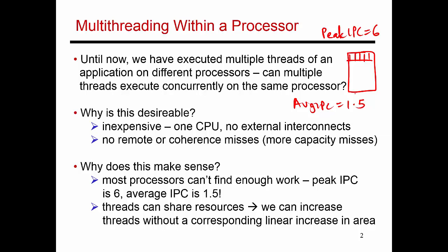Let me go through the different options and show you the trade-offs. I've designed a processor here that has a single core capable of an IPC of 1.5 while running exactly one thread. If I want to double the throughput of my system, one option is to build a larger processor with two different cores, so thread one runs on the first core and thread two runs on the second core. The IPC of each should still be close to 1.5, giving an aggregate IPC of 3.0 — essentially doubling throughput, but the area overhead is also double.